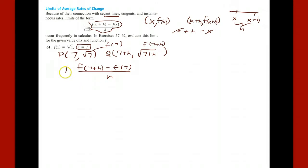And we take the limit as h goes to 0: the square root of 7+h minus the square root of 7, all over h.